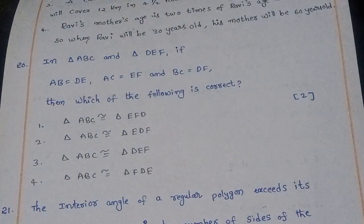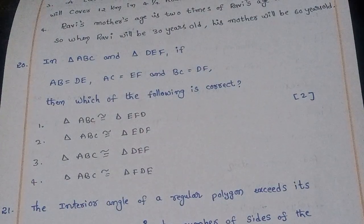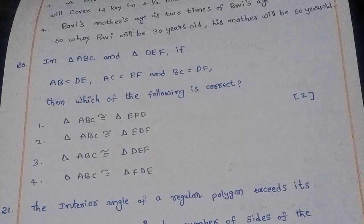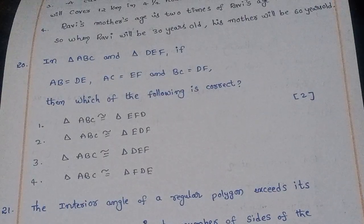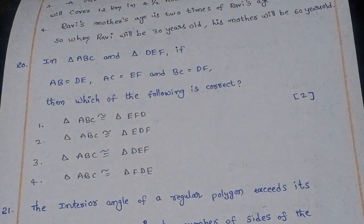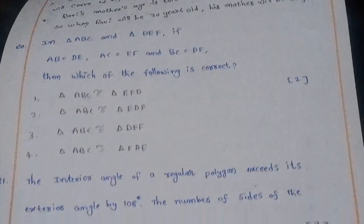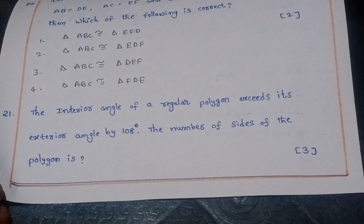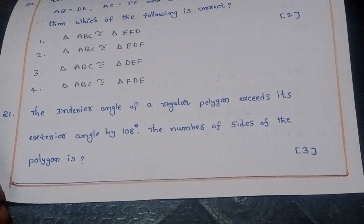Twentieth question: In triangles ABC and DEF, if AB = DE, AC = EF, and BC = DF, then which of the following is correct? The right answer is option 2: triangle ABC is similar to triangle EDF.